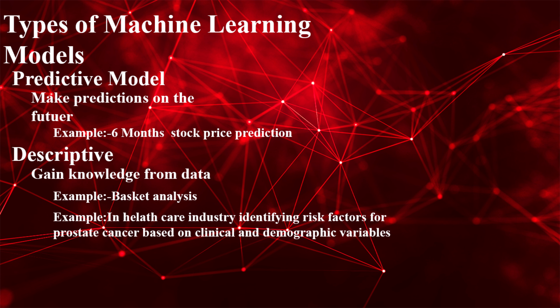The second one is the descriptive model. Descriptive models are simply trying to gain knowledge from data, and this definition is most similar to our previous machine learning definition. However, in descriptive models the difference is that we are not going to have an expected output necessarily. We only have input data and try to gather knowledge from that data.